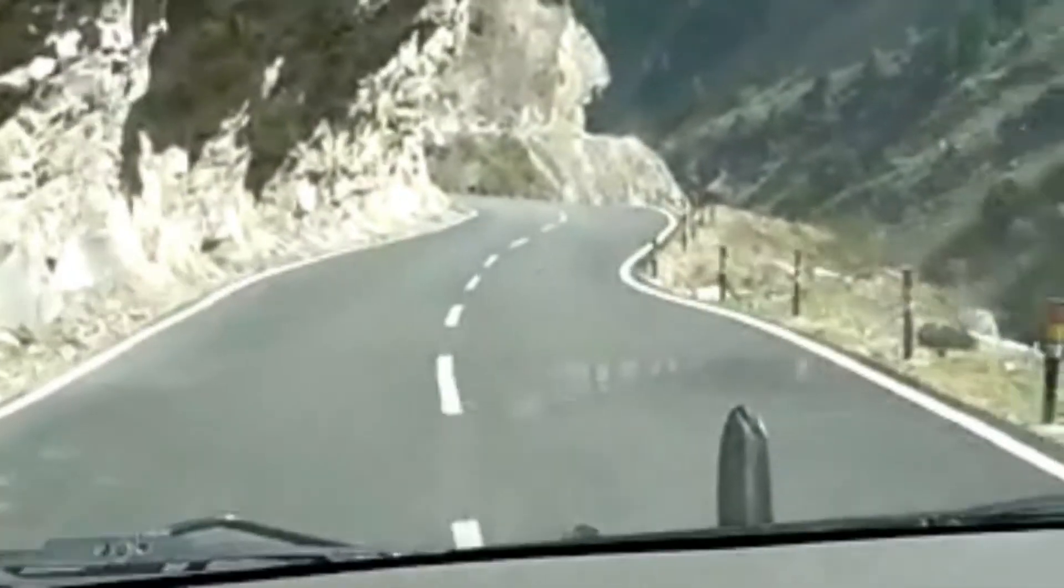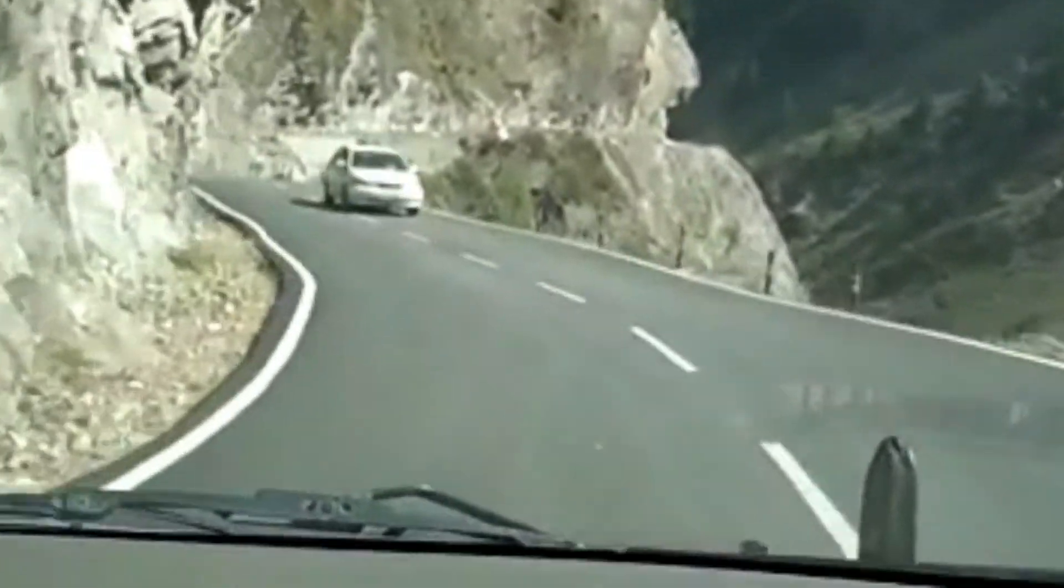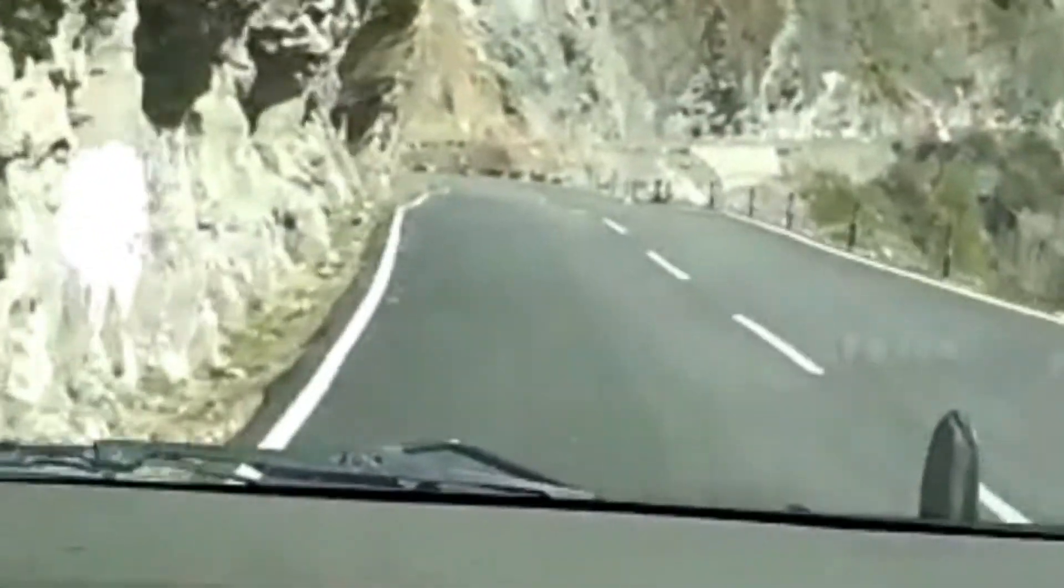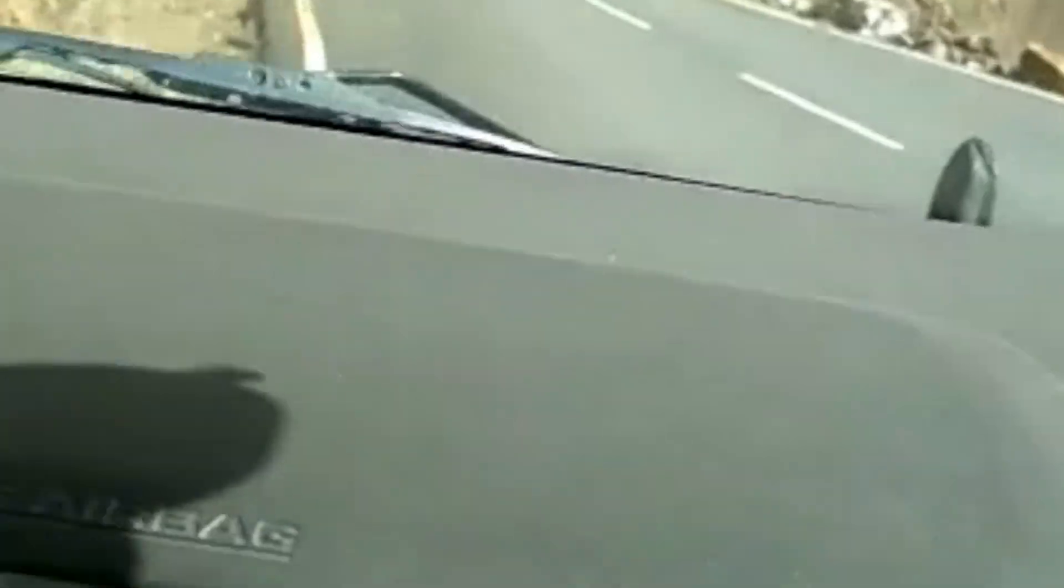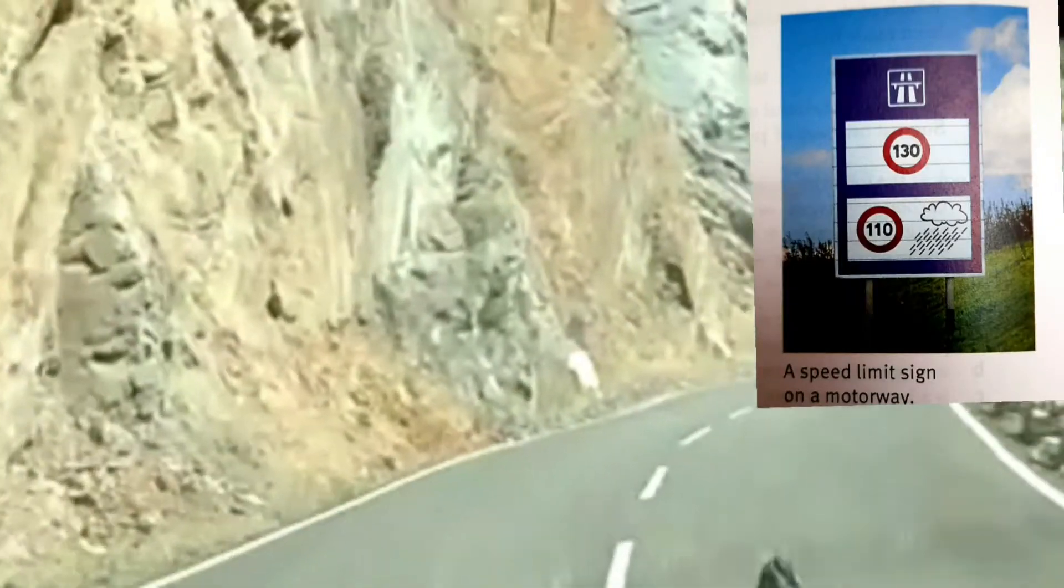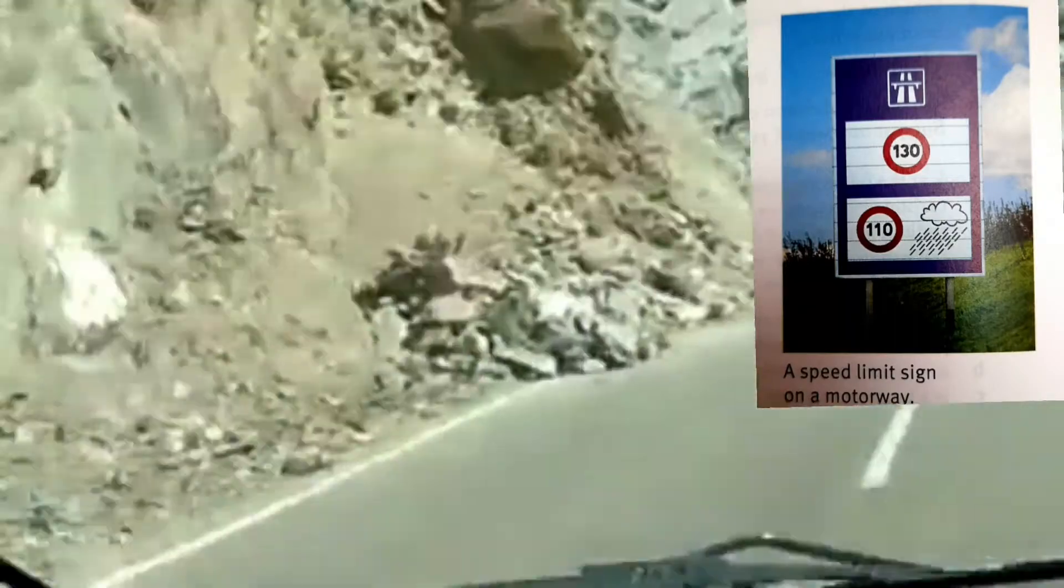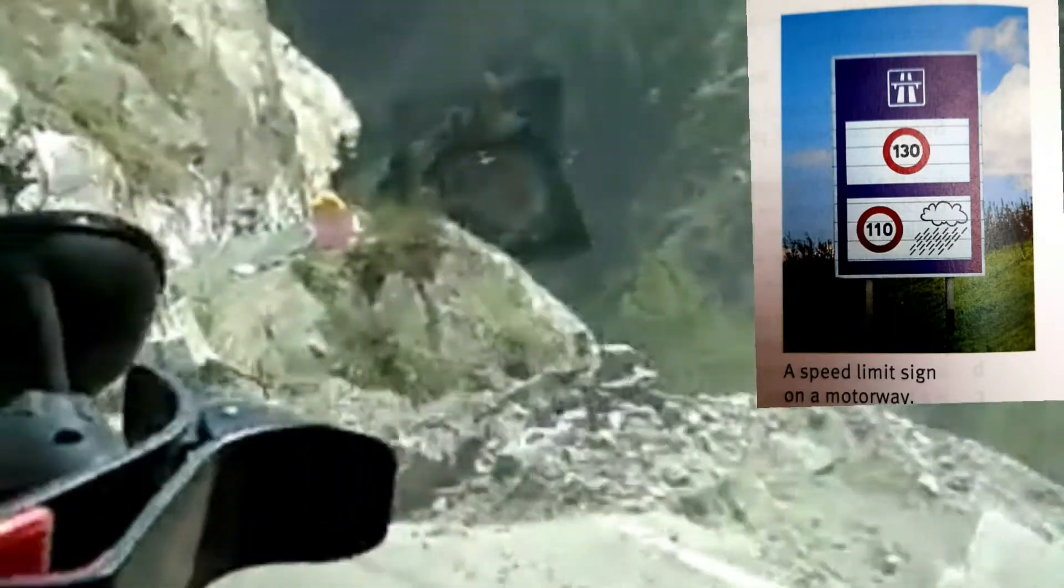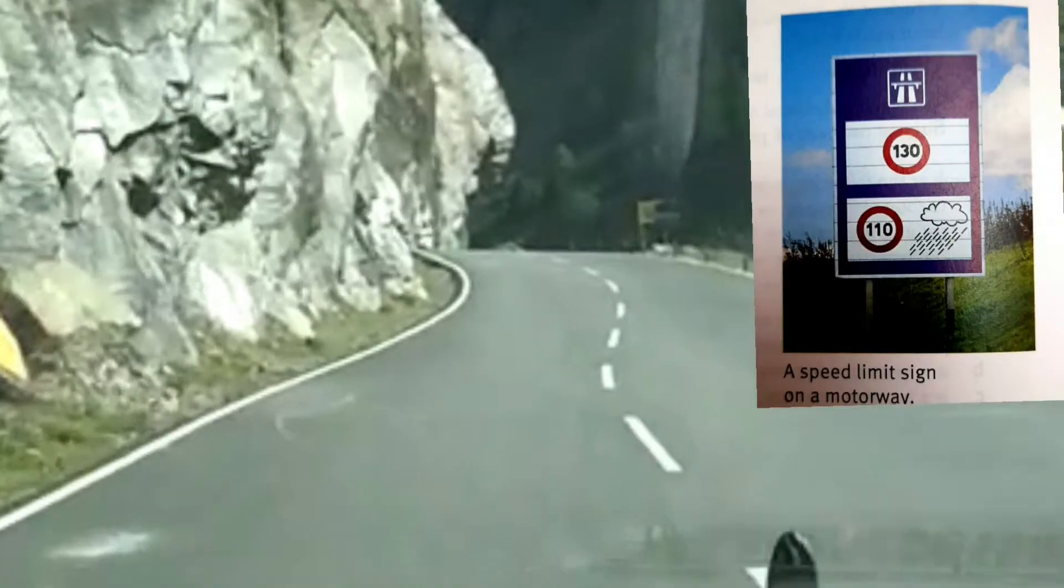Speed is the quantity that tells us how fast something is moving. Road traffic must obey the speed limit for the safety of everyone. Drivers on the motorway must obey the limit. The sign in the photograph shows that the speed limit is 130 kilometers per hour in dry weather. Can you tell me what is the speed in wet weather?